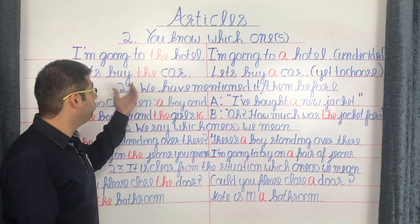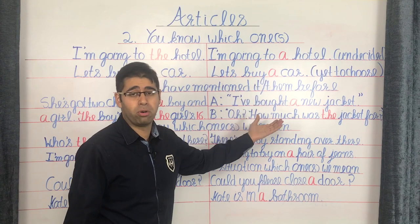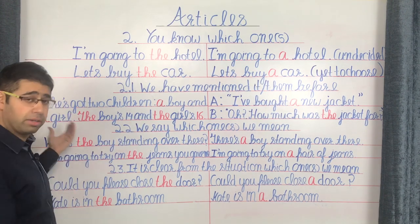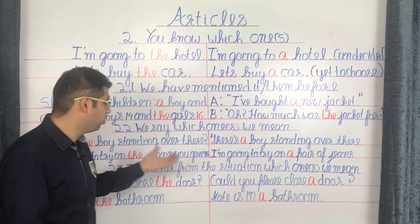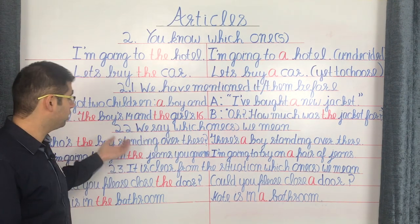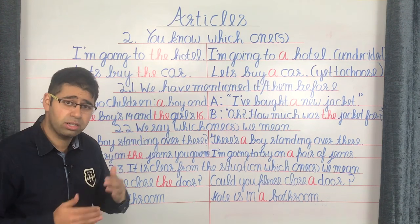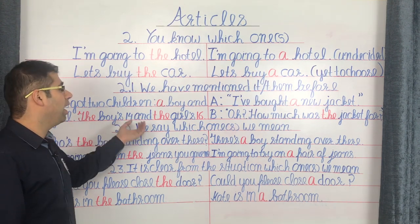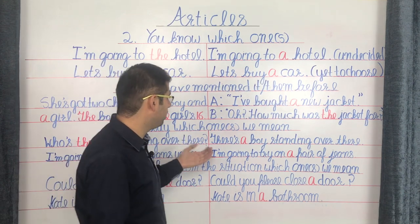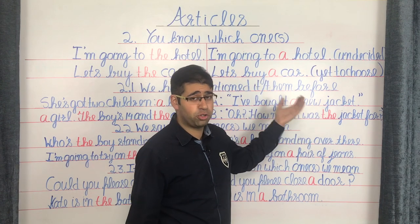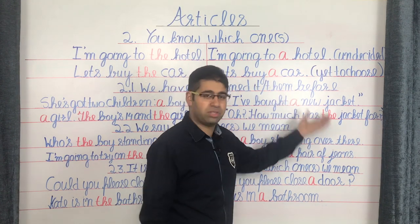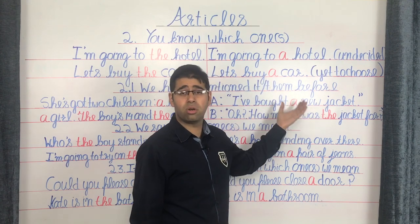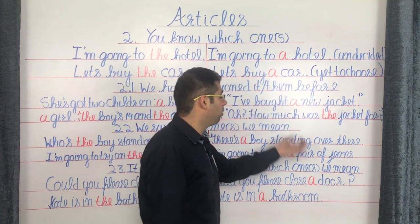The first situation is when we have already mentioned the thing or person before. For example: 'She's got two children, a boy and a girl. The boy is 14 and the girl 16.' The first time we introduce the boy and girl we use A, but the second time we refer to the same boy and girl we use THE. Similarly: 'I've bought a new jacket' — first introduction, so A. The listener responds: 'Oh, how much was the jacket for?' — already mentioned, so THE.